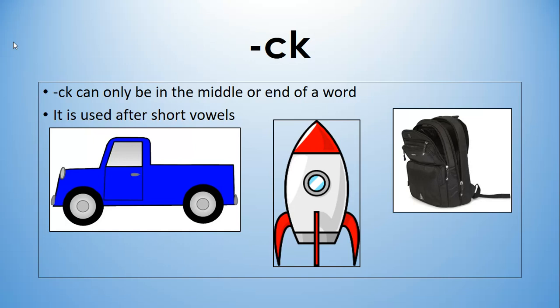Again, those sounds are exaggerated, but in truck, the CK comes after the short U sound. In rocket, even though CK is in the middle of the word, it follows the short O sound. And in backpack, it follows the short A sound in both of those words.